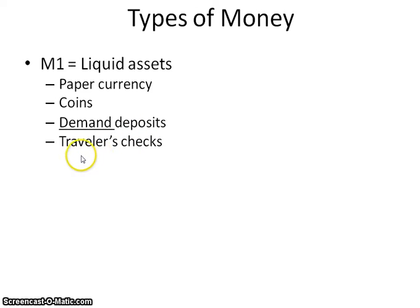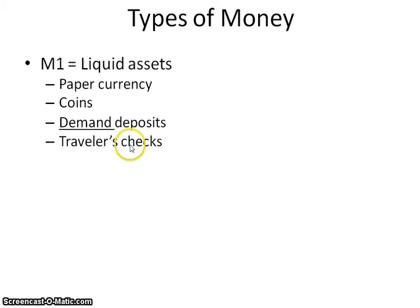Traveler's checks are what people take with them on trips because they don't want to carry around a lot of cash. You withdraw money from your demand deposit account, your checking account, and you're given different checks in denominations like 20s, 50s, and 100s. If I'm using a $20 traveler's check and it only costs $15, I sign it in front of them, show my identification, and they'll give me $5 in cash. It's just a way to be safe while traveling.